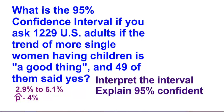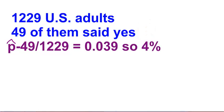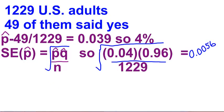Let's find this the longer way without the graphing calculator. We asked 1,229 adults, and 49 of them agreed. First, find our sample proportion: take 49 divided by 1,229, which we can round to 4%. Now we need to find the standard error of the sample proportion. Our p-hat is 0.04, and q-hat is 1 minus p-hat, which gives us 0.96. We divide by our n value, 1,229, and we get 0.0056.